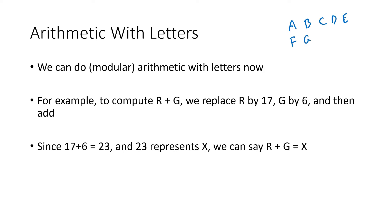I'm going to write out the full alphabet now. If you remember when we did the bifid cipher we left out the letter J — we're not going to do that this time, we're using the full alphabet.